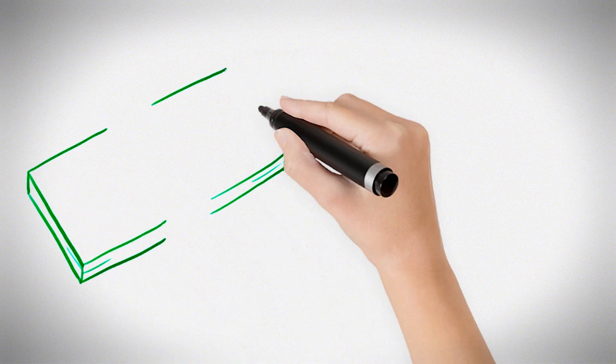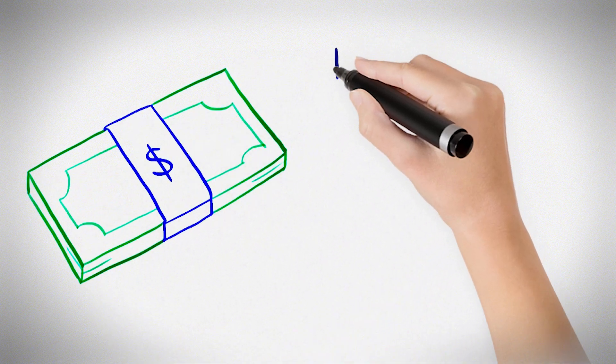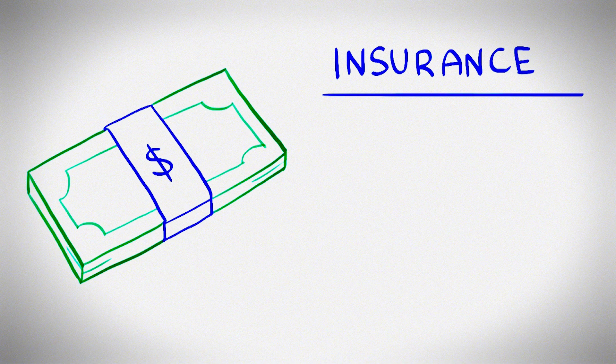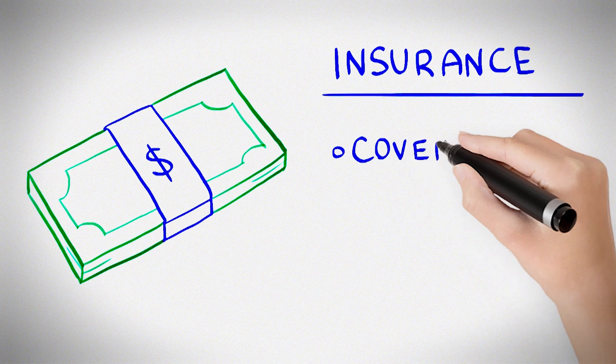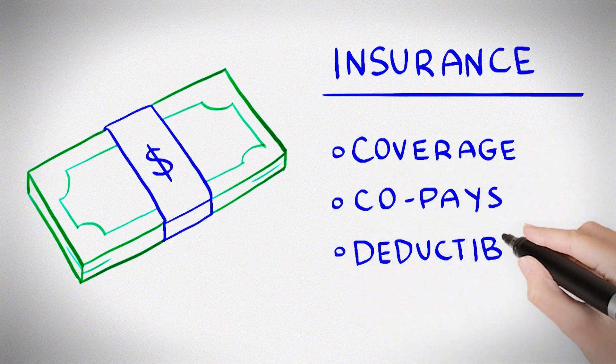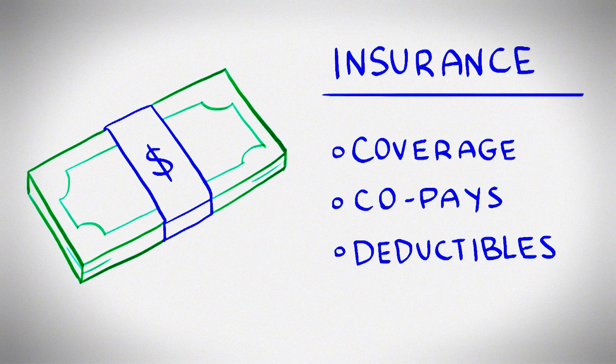What about cost? Puberty blocker medicine can be expensive. Only some insurance plans cover them. Some will only cover one of the medicines. The Gender Clinic Care Navigator can help you navigate the insurance process, including coverage, co-pays, and deductibles. Financial aid may be available.